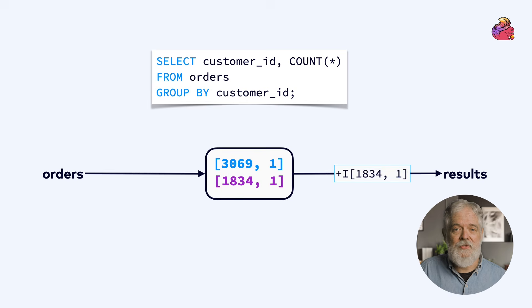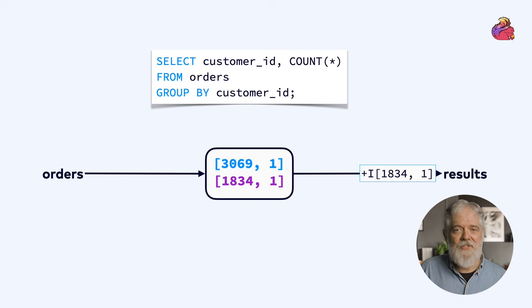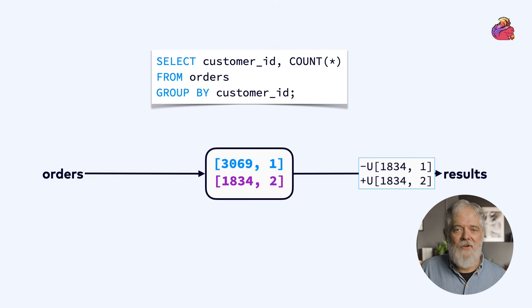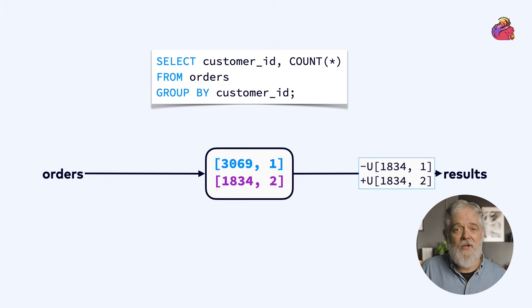And for the next order, we do the same thing, but this time for customer 1834. With the third order, the effect is a bit different. This time the result is an update of the count for customer 1834 from 1 to 2, expressed as a retraction of the previous query, along with an update. What you're seeing here is that Flink SQL is designed to consume and produce streams, and those streams are, in general, changelog streams.